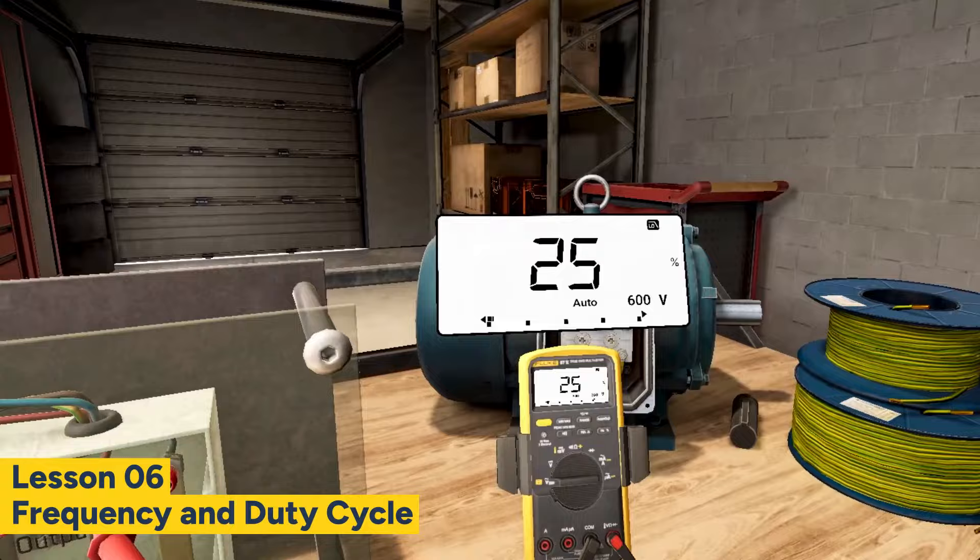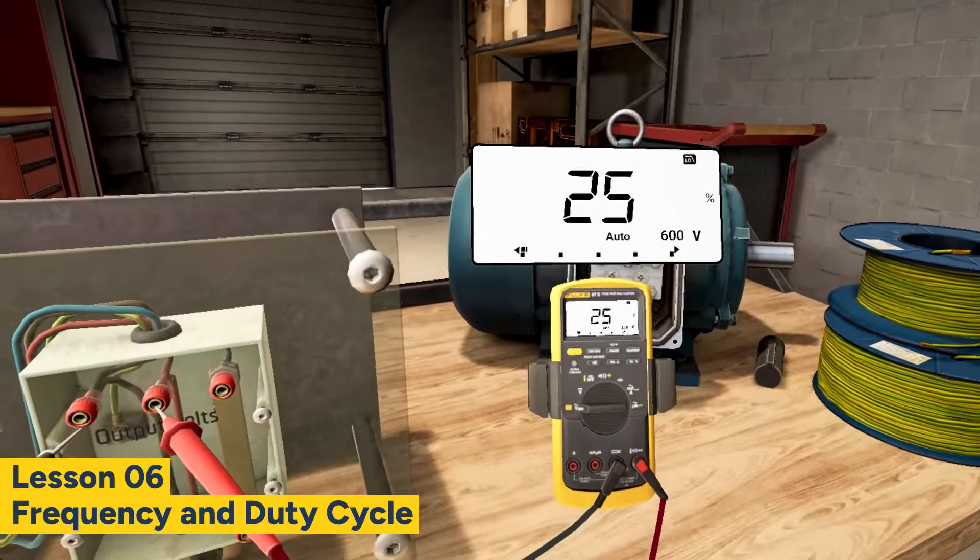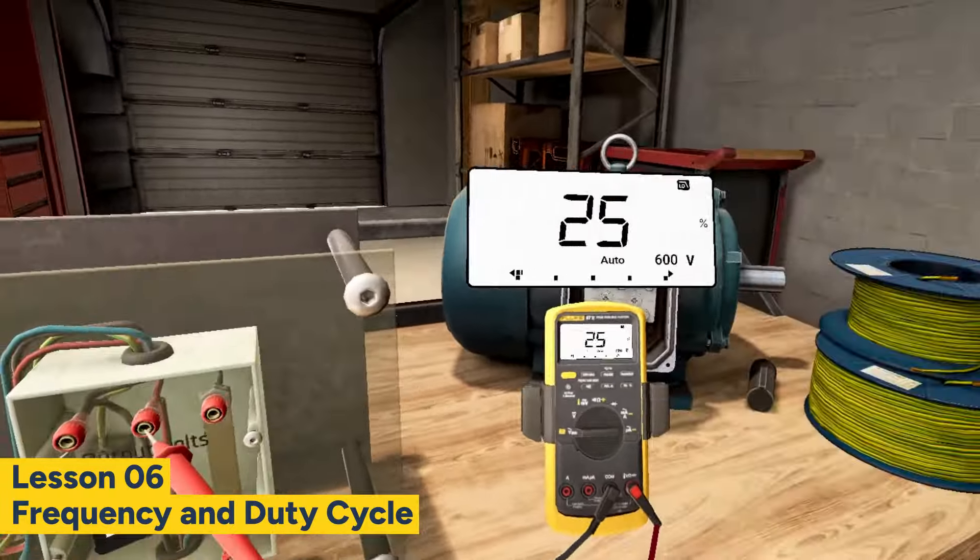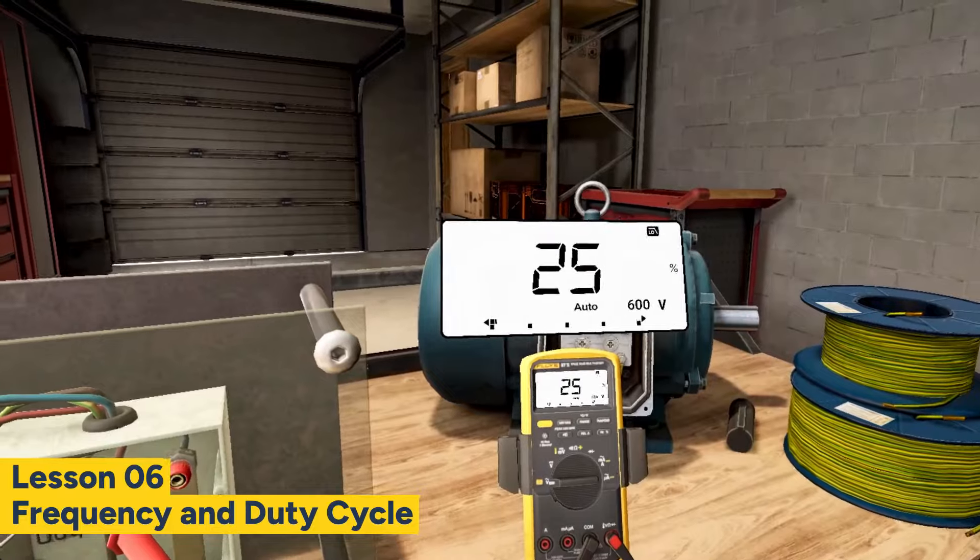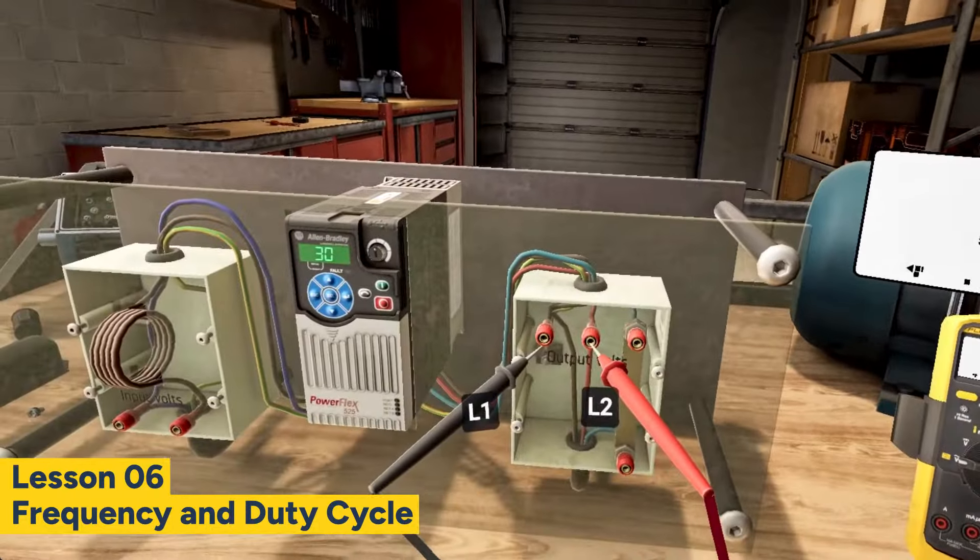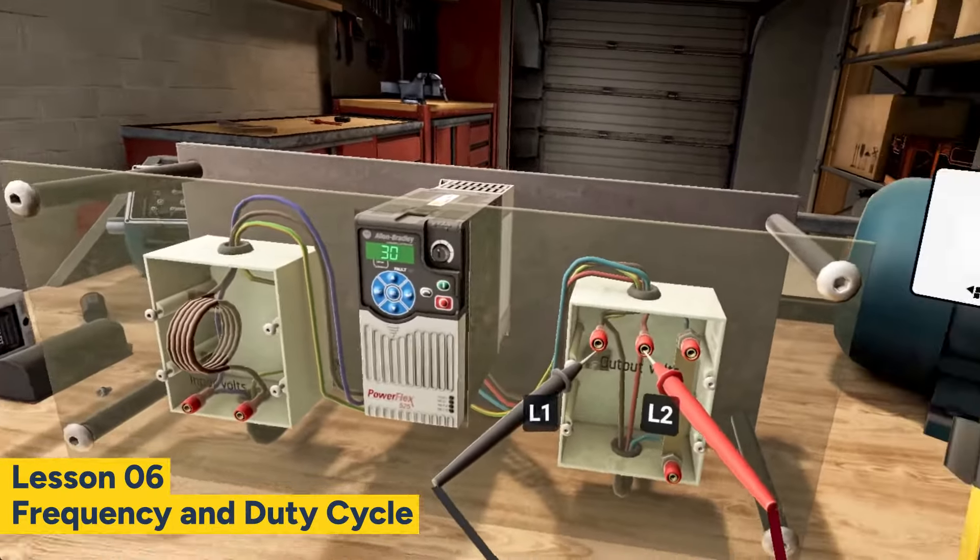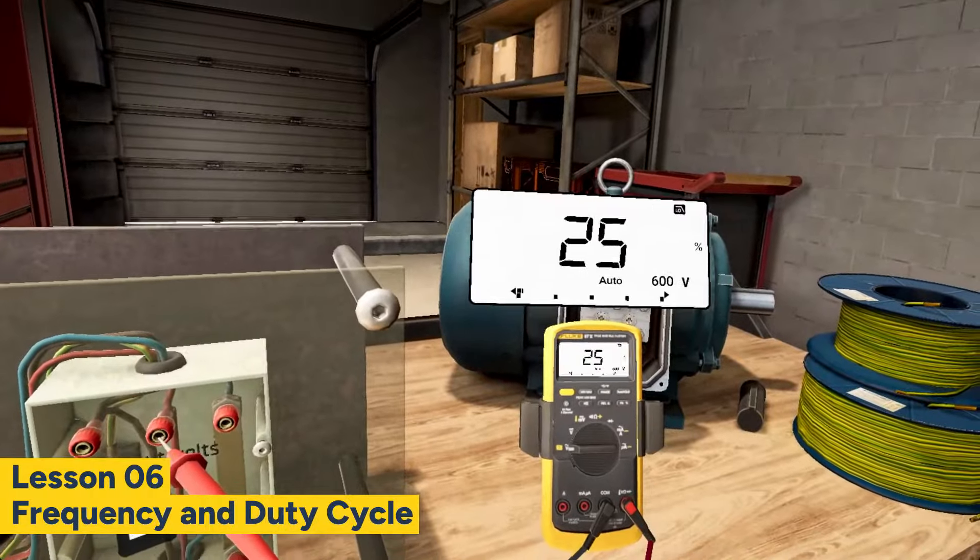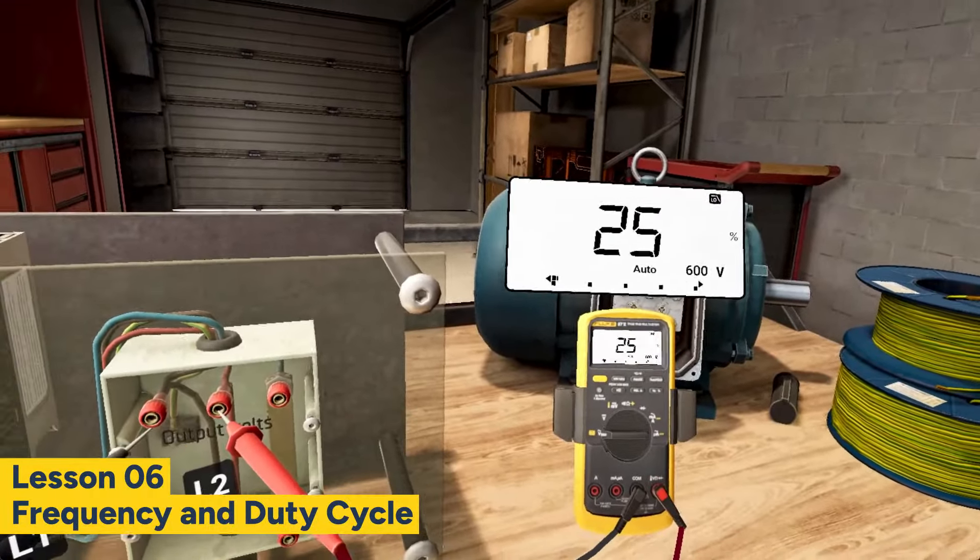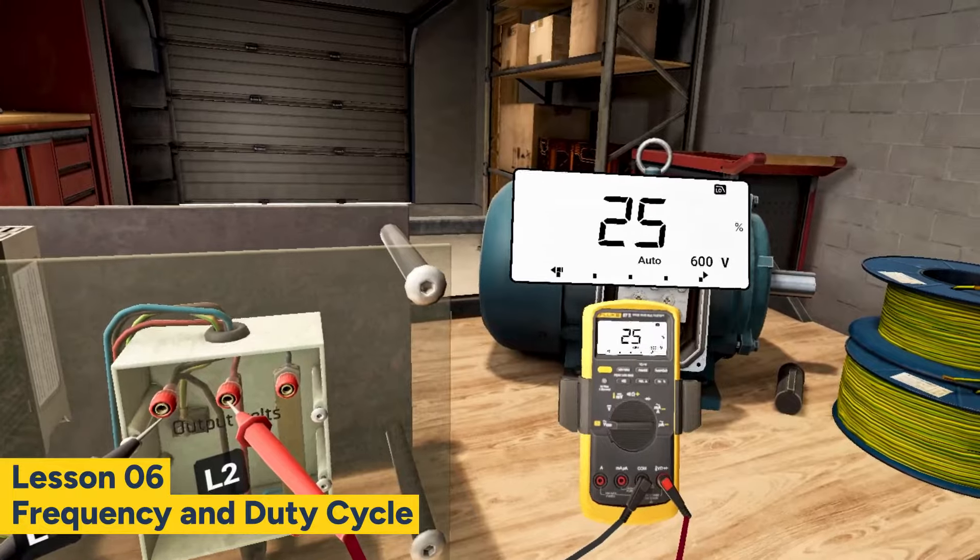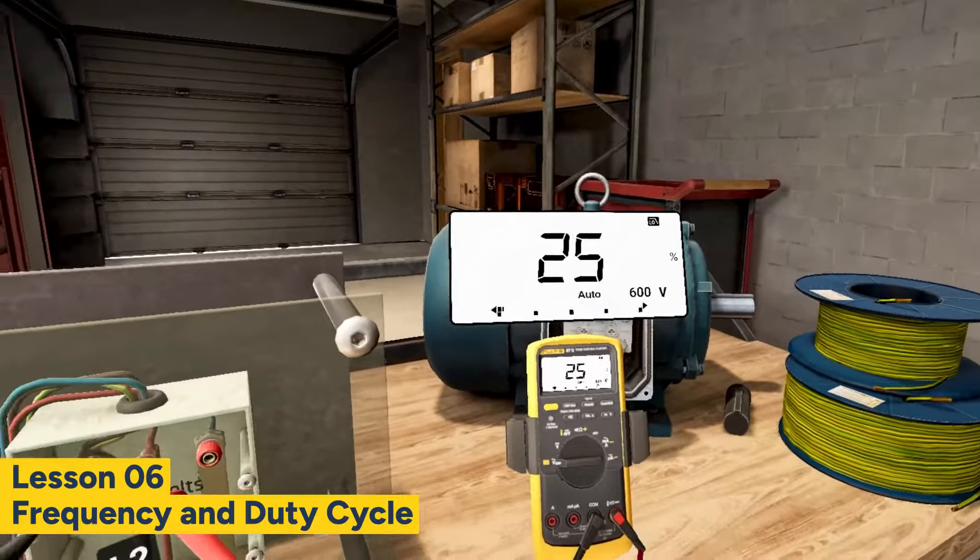Now, let's switch our focus to another important function of the multimeter, measuring current. To measure current, one common method involves connecting the multimeter in series with one of the motor's phases. We will use the test terminals on our demonstration panel which simulate a break in one of the phases, allowing for our multimeter to be connected in series.